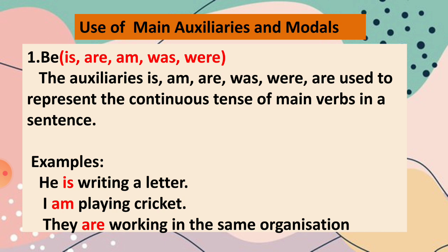They are used to represent the continuous tense. For example: He is writing a letter. I am playing cricket. They are working in the same organization. Here, is, am, and are — all three helping verbs help the main verbs writing, playing, and working to represent the continuous tense. This is the use of these auxiliaries.